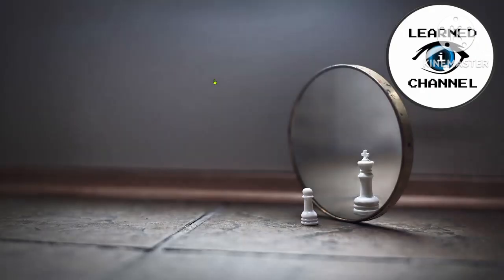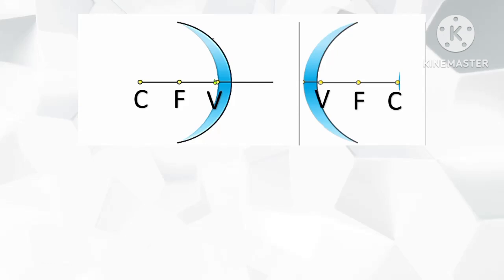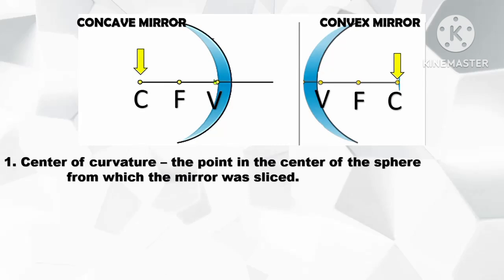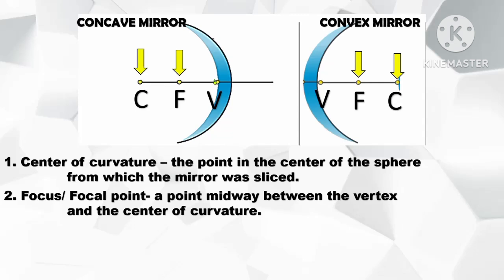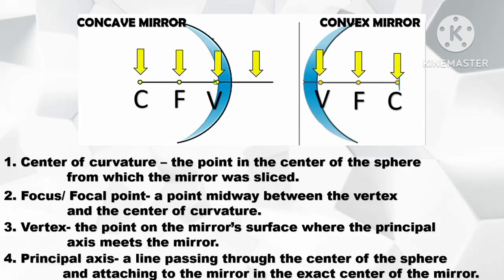Our topic for today is all about ray tracing technique in curved mirrors. Let us remember the following parts of the mirror. Letter C stands for the center of curvature, the point in the center of the sphere from which the mirror was sliced. Letter F stands for focus or focal point, a point midway between the vertex and the center of curvature. Letter V stands for the vertex, the point on the mirror surface where the principal axis meets the mirror. And this line is what we call the principal axis, a line passing through the center of the sphere and through the exact center of the mirror.